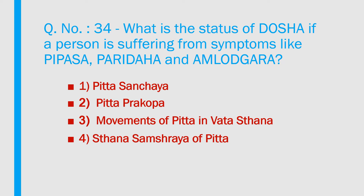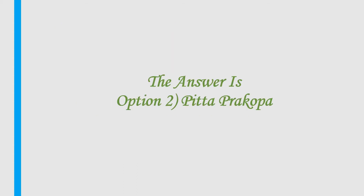Question number 34: What is the status of dosha if a person is suffering from symptoms like vipasa, paridaha, amlodhgara, pitta sanjaya — movements of pitta in vada sthana? Options: 1) Pitta sanchaya, 2) Pitta pragoba, 3) Pitta sthana samsraya, 4) Pitta prasara. Answer is option 2 — Pitta pragoba.